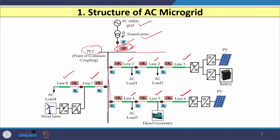For each line 1 to line 8, there is a separate relay and circuit breaker — R1 and CB1 for line 1, R2 and CB2 for line 2, and so on up to R8 and CB8. If any fault occurs in line 1, relay R1 must sense the fault, give a signal to circuit breaker 1, and circuit breaker 1 must isolate the faulty section without affecting the remaining healthy sections. Several AC loads are also connected.